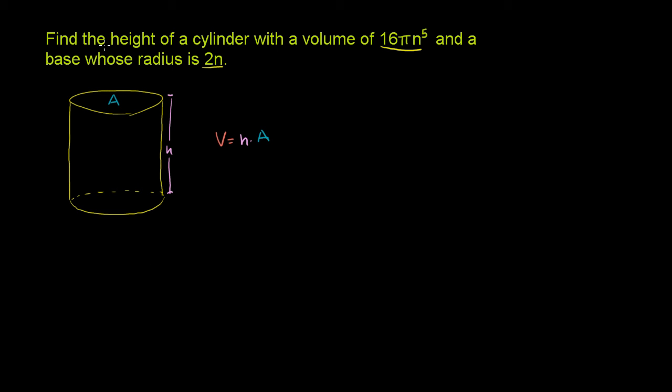What do they tell us here? We want to find the height. They say find the height, so we need to solve for h. This is what we don't know. Of a cylinder with a volume of 16π n to the fifth, so they tell us the volume. That right there is 16π n to the fifth. And then they tell us a base whose radius is 2n. So they're not telling us the area, but they're telling us the radius. They're telling us that this radius right here, that radius is 2n.